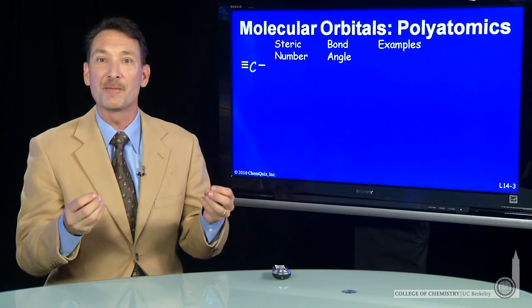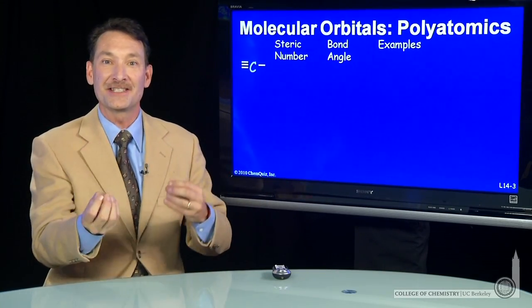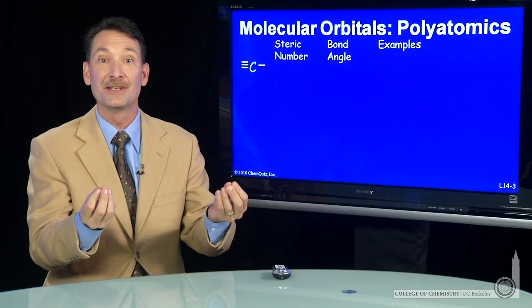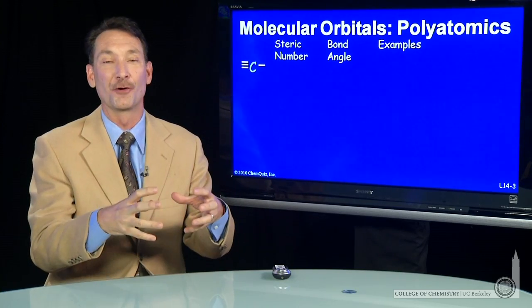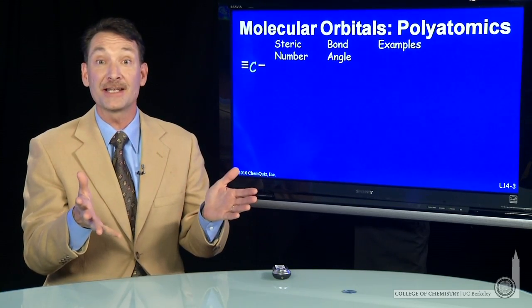To describe molecules quantum mechanically, we can take the atomic orbitals from the atoms and recombine them to form molecular orbitals. And that works well for diatomics.